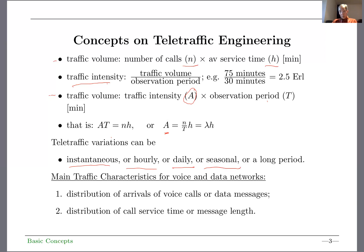Traffic also varies seasonally — winter versus summer — and depending on location; for example, a resort area could be busier in the summertime compared to a city in winter. Over a long duration there can be annual changes too: during economic growth, traffic volume could increase, while during a recession, traffic volume could decrease.